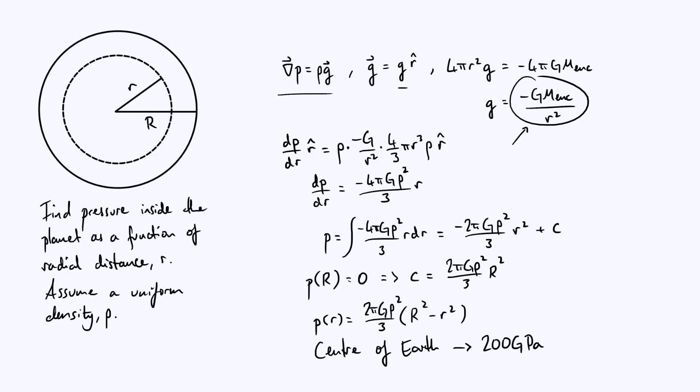If you wanted to refine this model a little bit, all you would have to do is go back to the stage where we integrated. And this ρ² here, instead of treating that as a constant, you would just put in ρ as a function of r, if you know how it depends on r, and then do the resulting integral either analytically or numerically.